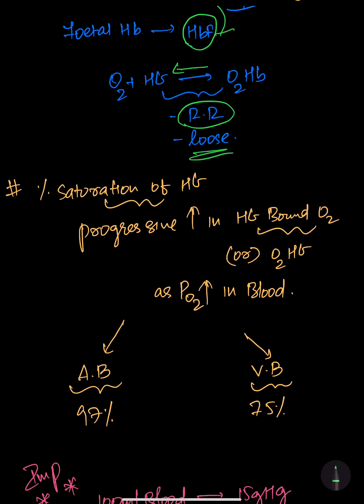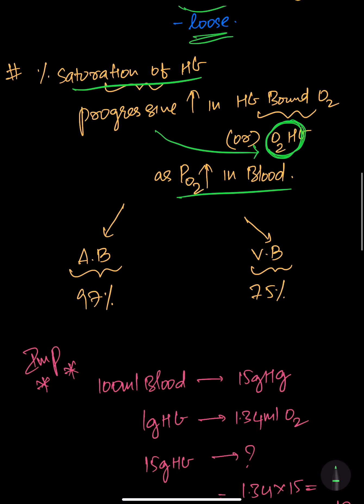The percentage saturation of hemoglobin refers to the progressive increase in hemoglobin-bound oxygen — that is, increasing levels of oxyhemoglobin. In arterial blood, the saturation of hemoglobin is 97%, because arterial blood contains more oxygen. In venous blood, the saturation of hemoglobin is 75%, as less oxygen is present there.